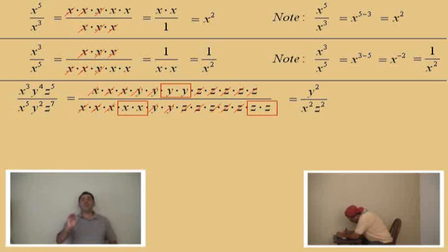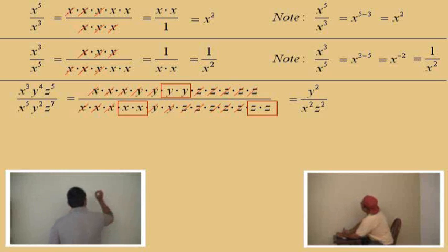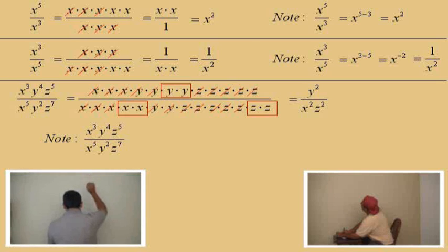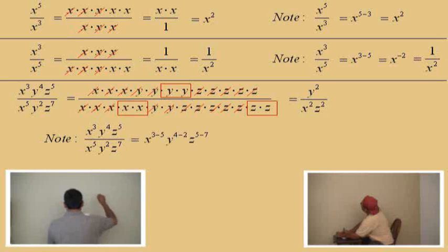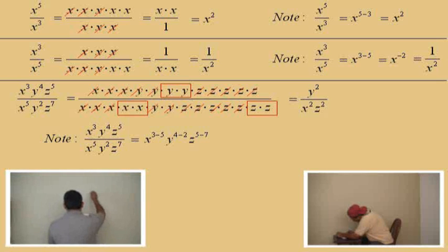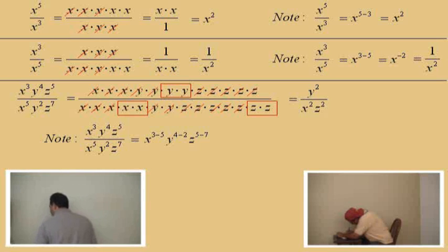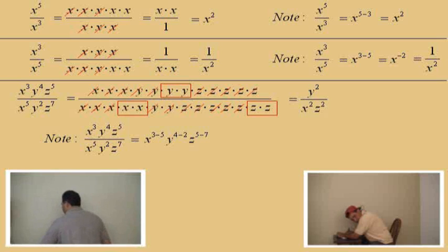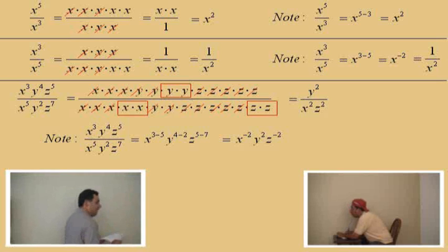So let's go back and look at the rules for exponents. Since we're dividing here with the same base, we're going to subtract the exponents. We have x cubed being divided by x to the fifth, which means x to the 3 minus 5. Then the y's: y to the fourth over y squared means y to the 4 minus 2 power. And the z: z to the fifth over z to the seventh is z to the 5 minus 7. When you do your arithmetic, you should get x to the negative 2, y to the positive 2, and z to the negative 2.